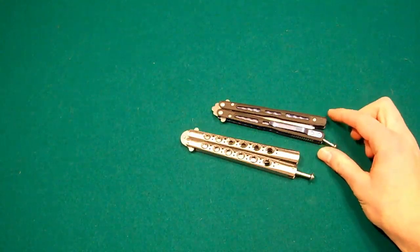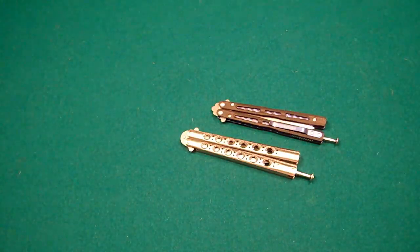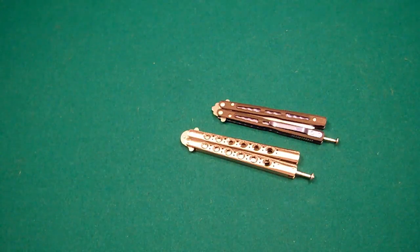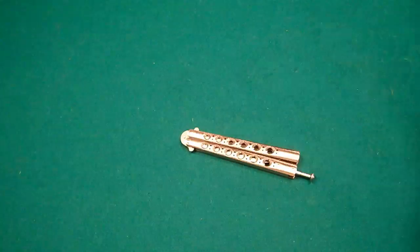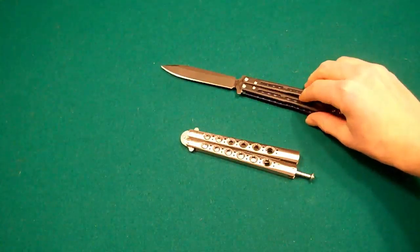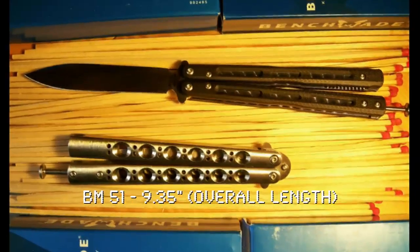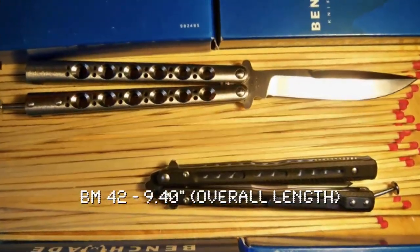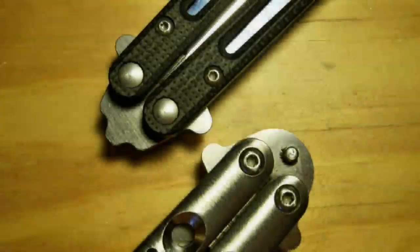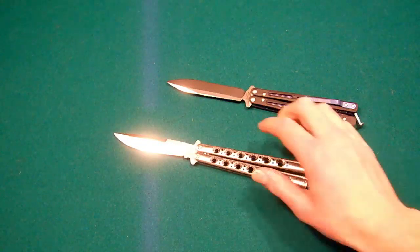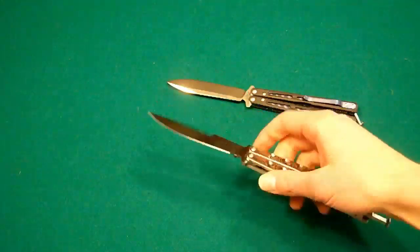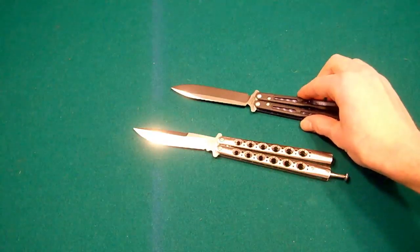So yeah, it's kind of surprising that the 51 does have a longer blade. It makes it kind of interesting. And the overall length of the 51 is 9.35 inches, and the overall length of the 42 is 9.40 inches. So we got a little bit of differences there in closed and open length. So we've discussed blade length, blade thickness, blade material, and blade style. Let's move on to the weight.